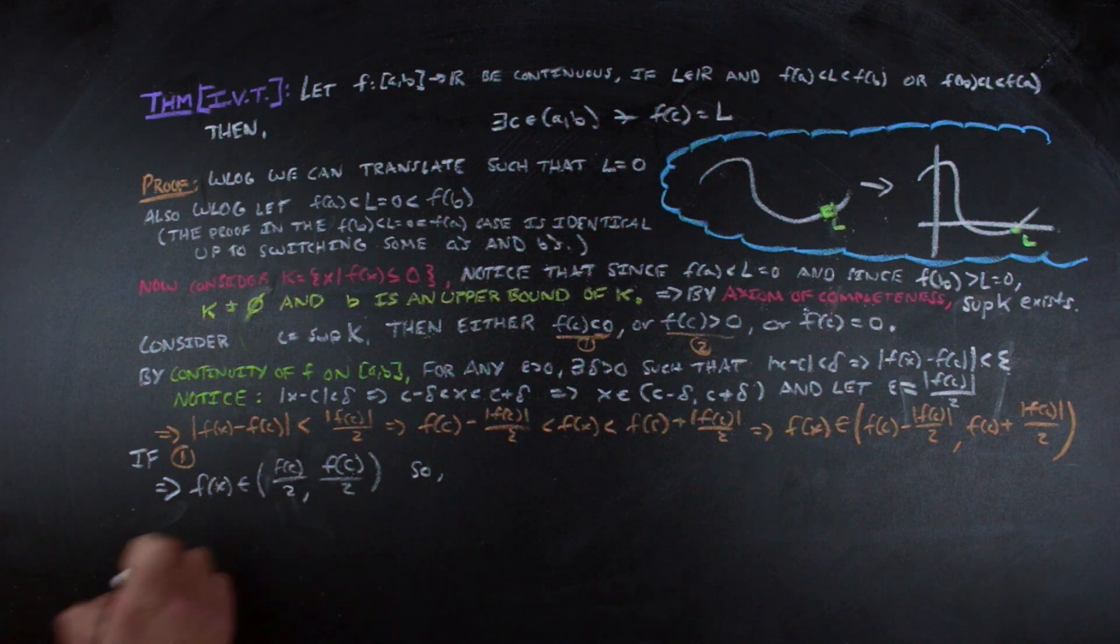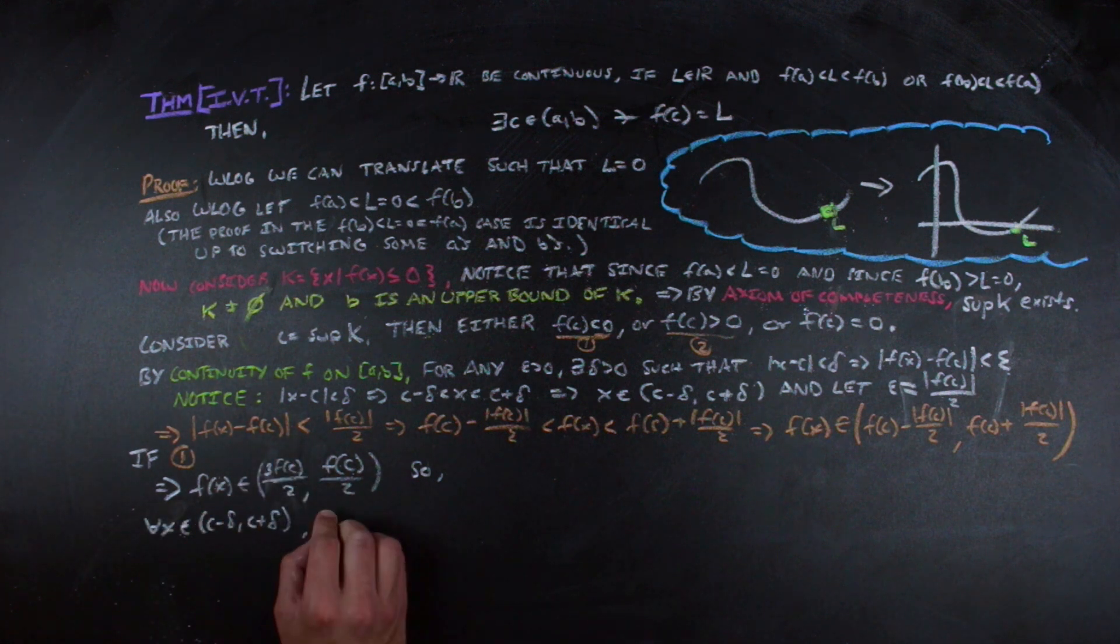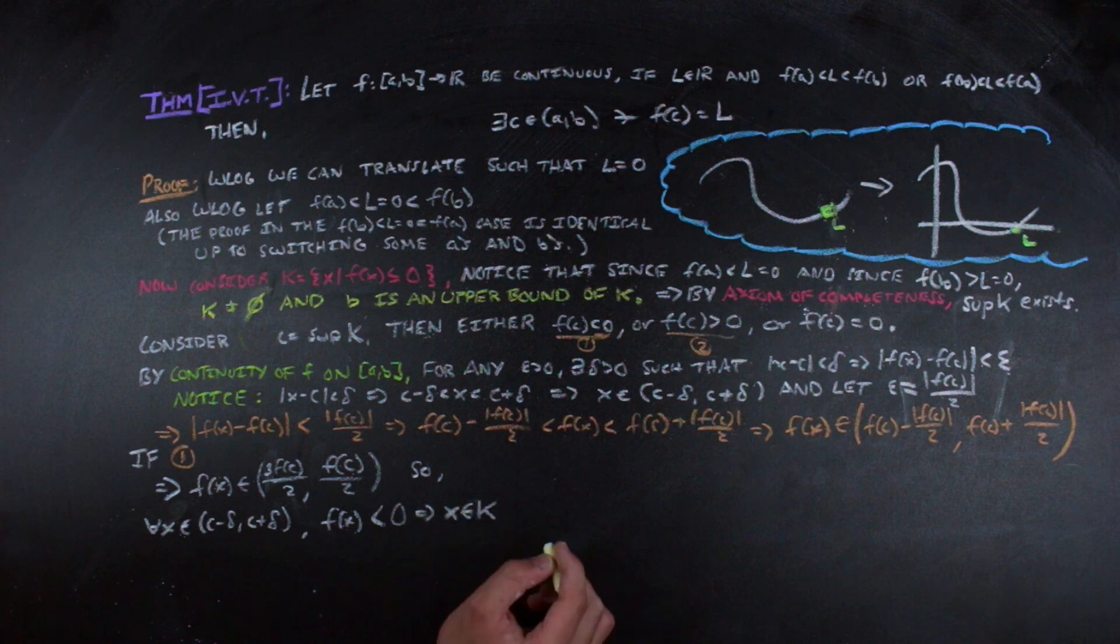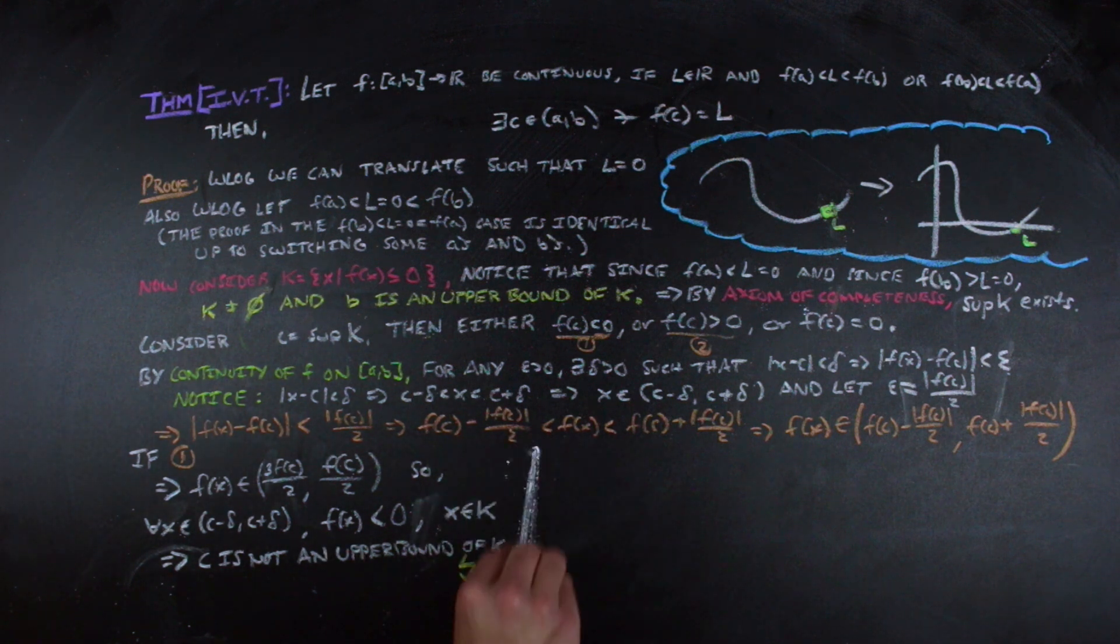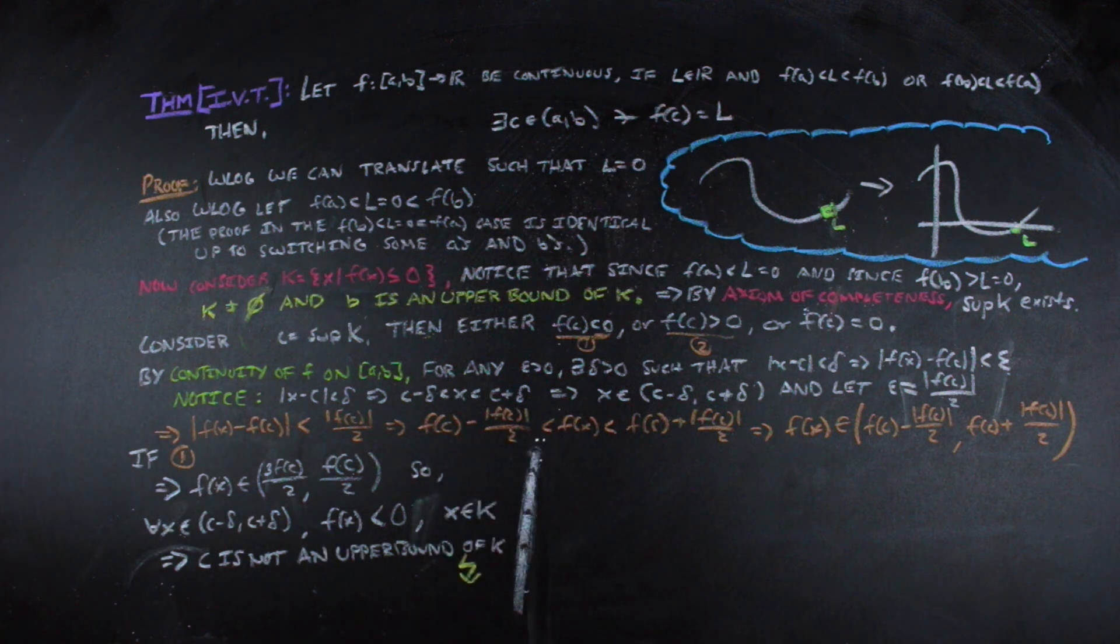Here we get that every x within delta of c has an image that is less than 0. So there is an element of K that is greater than c. So c cannot be an upper bound of K. Thus c cannot be the least upper bound, or in other words, it can't be the supremum. And this is a contradiction because we defined c as the supremum of K.